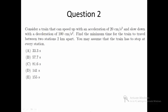Question 2. Consider a train that can speed up with an acceleration of 20 cm per second squared and slow down with a deceleration of 100 cm per second squared. Find the minimum time for the train to travel between two stations 2 km apart.